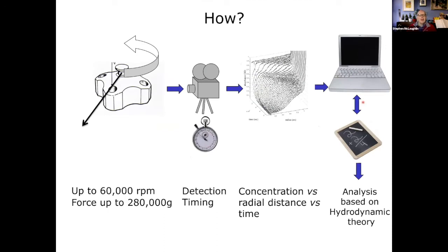It's a big challenge to look at these things. Obviously in principle you just spin things very hard and then look at them, but the challenge is you've got to be able to look at the concentration and then be able to analyze the data. When we do AUC we put samples into special rotors, and the force can be up to 280,000 g — about the force a bullet coming out of a gun would undergo.